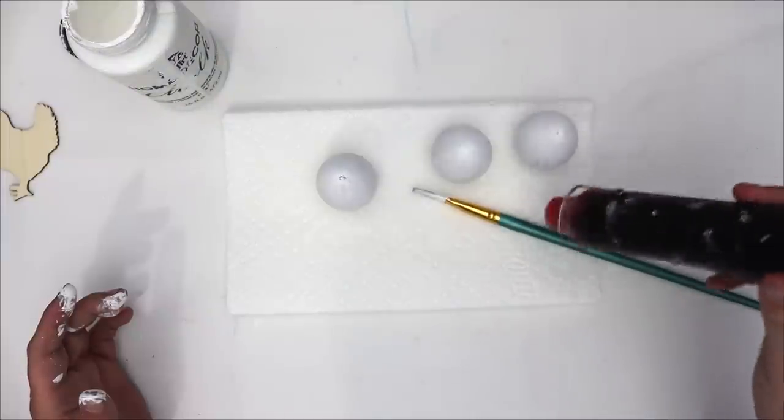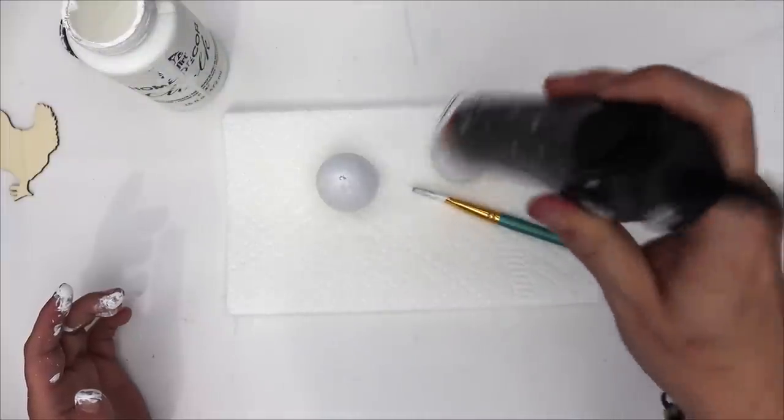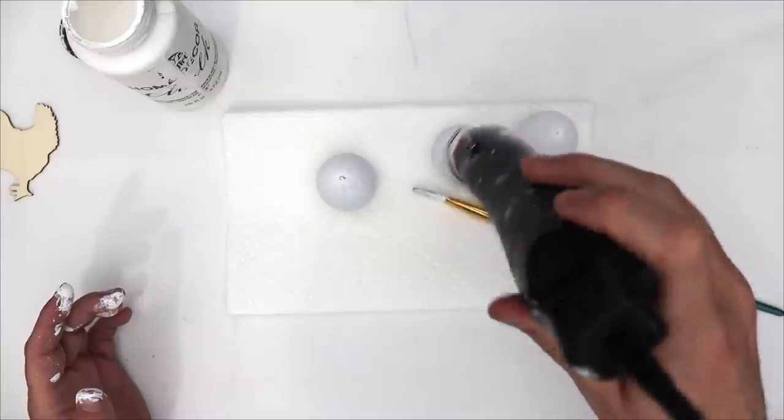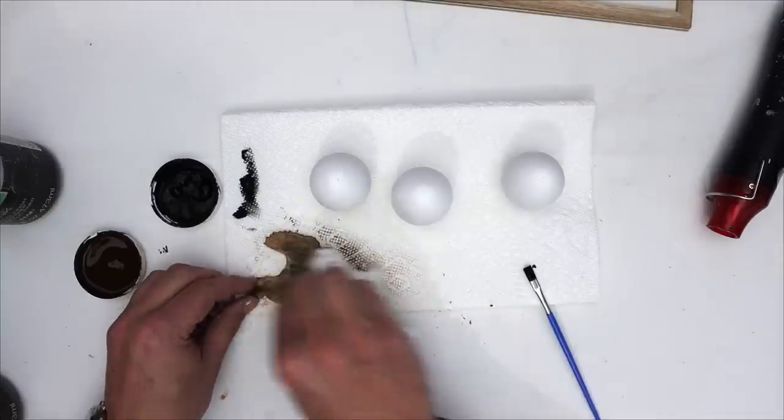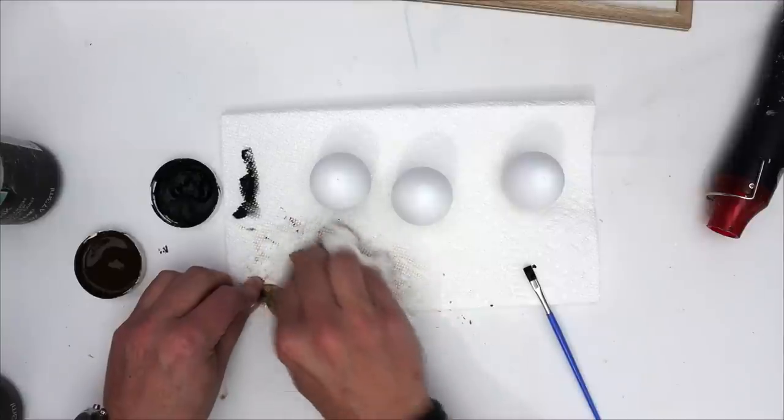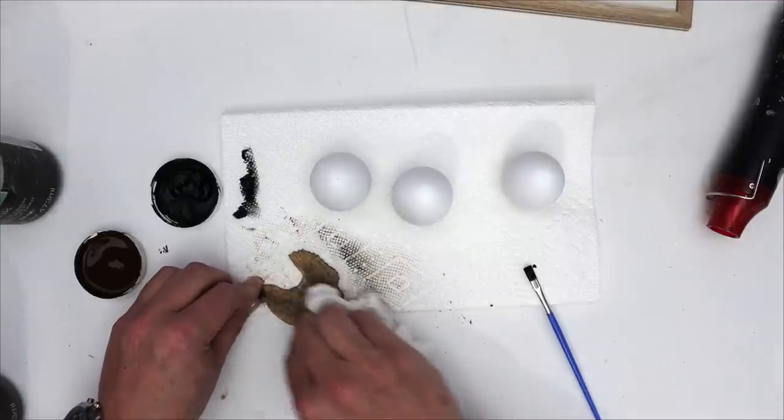So once I've got all of those painted, I did take my heat gun and just dry those out. And then we are going to start to work on our chicken. So originally I was going to use just antiquing wax on the chicken and just kind of stain it, but I really didn't like the way it looked.